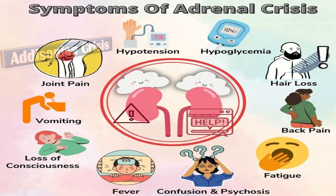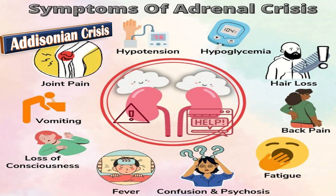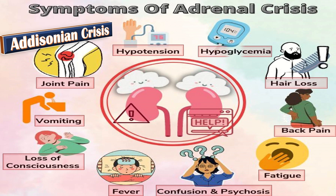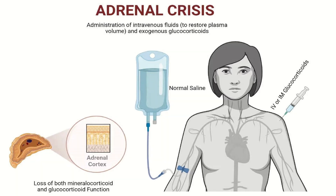Clinical features of adrenal crisis include hypotension, joint pain, vomiting, loss of consciousness, fever, confusion, psychosis, fatigue, back pain, hair loss, and hypoglycemia. Management includes administration of intravenous fluids to restore plasma volume and exogenous glucocorticoids.